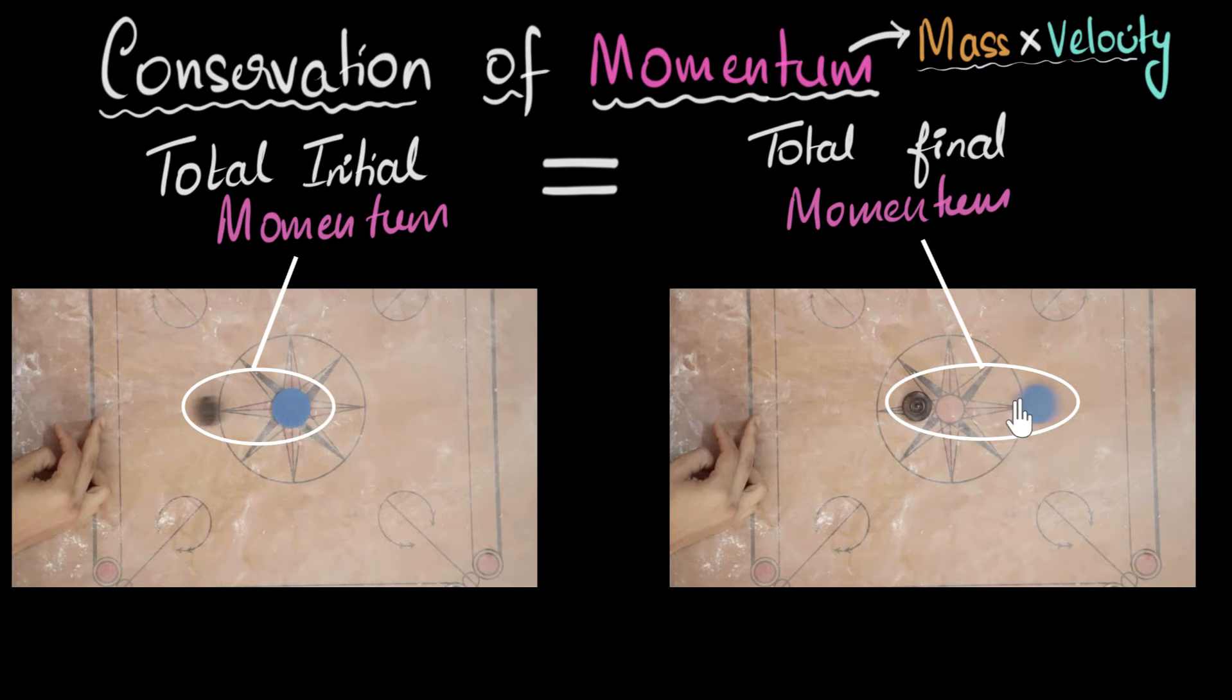So clearly, the individual momentum has changed, right? But the principle says the total value will not change. So even after the collision, the total momentum remains the same. And that's why we say the total momentum is conserved. That's the meaning of conservation of momentum.